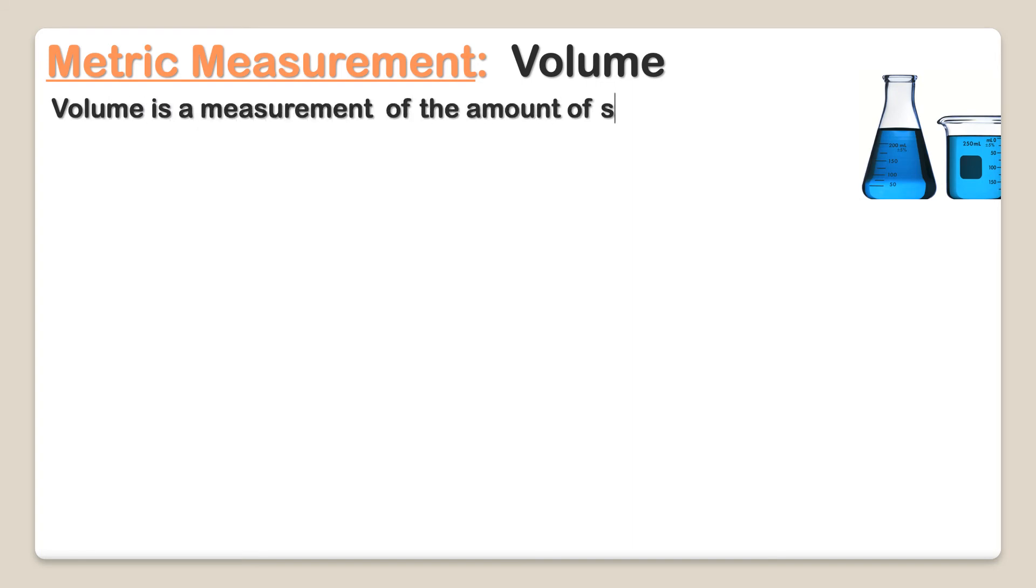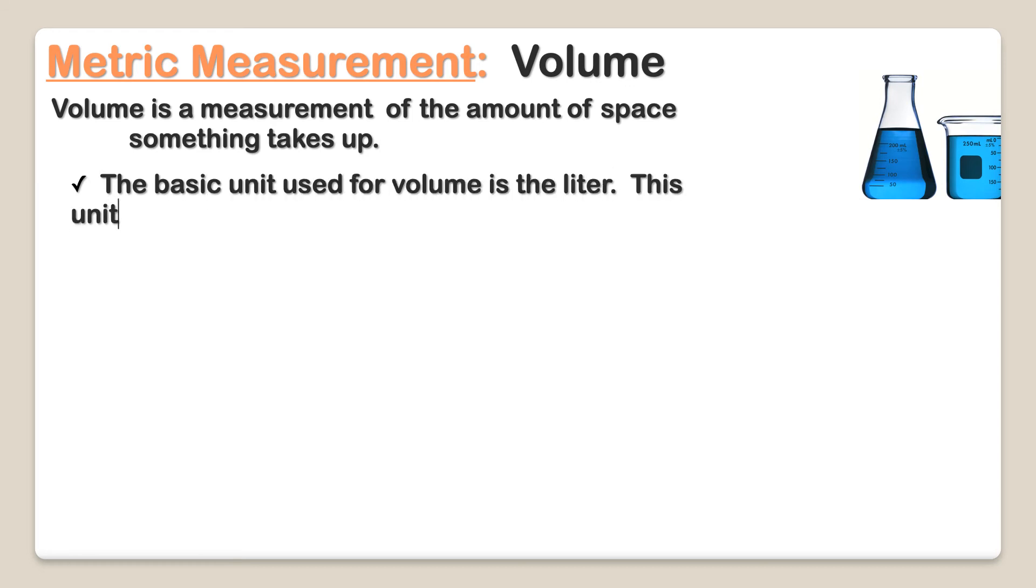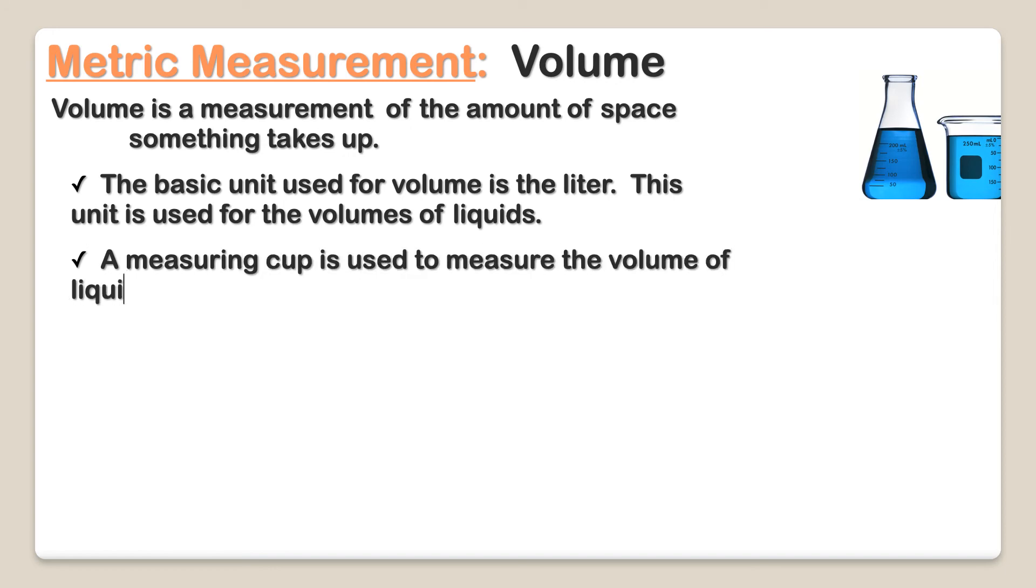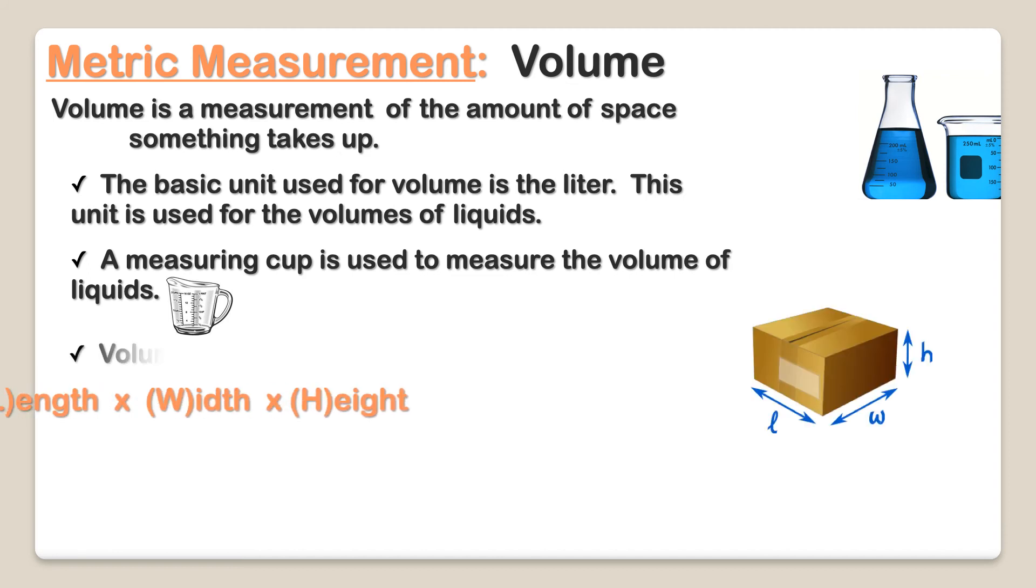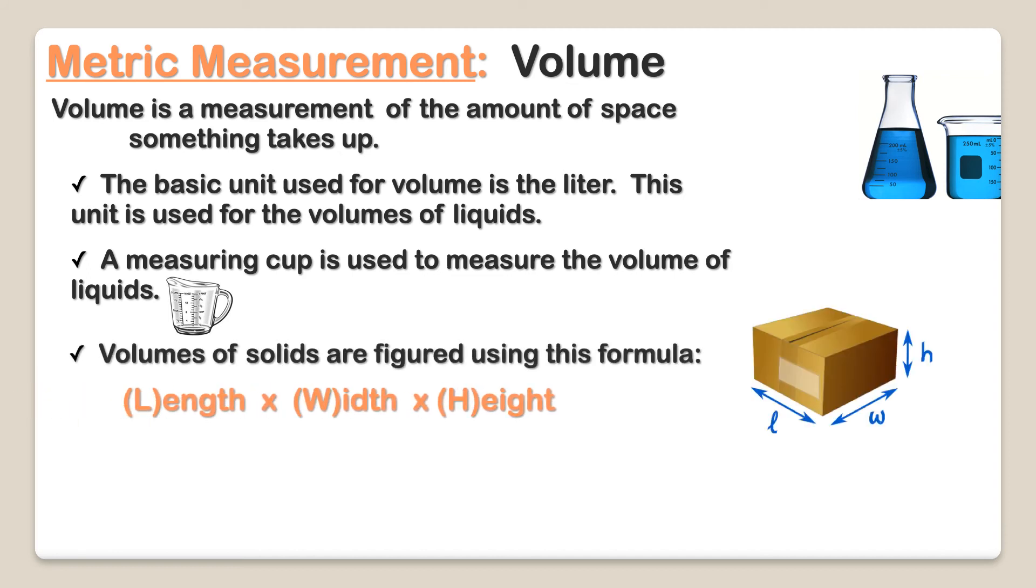Volume is a measurement of the amount of space something takes up. The basic unit used for volume is the liter. This unit is used to measure the volume of liquids. A measuring cup is used to measure the volume of liquids. Volumes of solids are figured using this formula: length times width times height. This is written in cubic units.